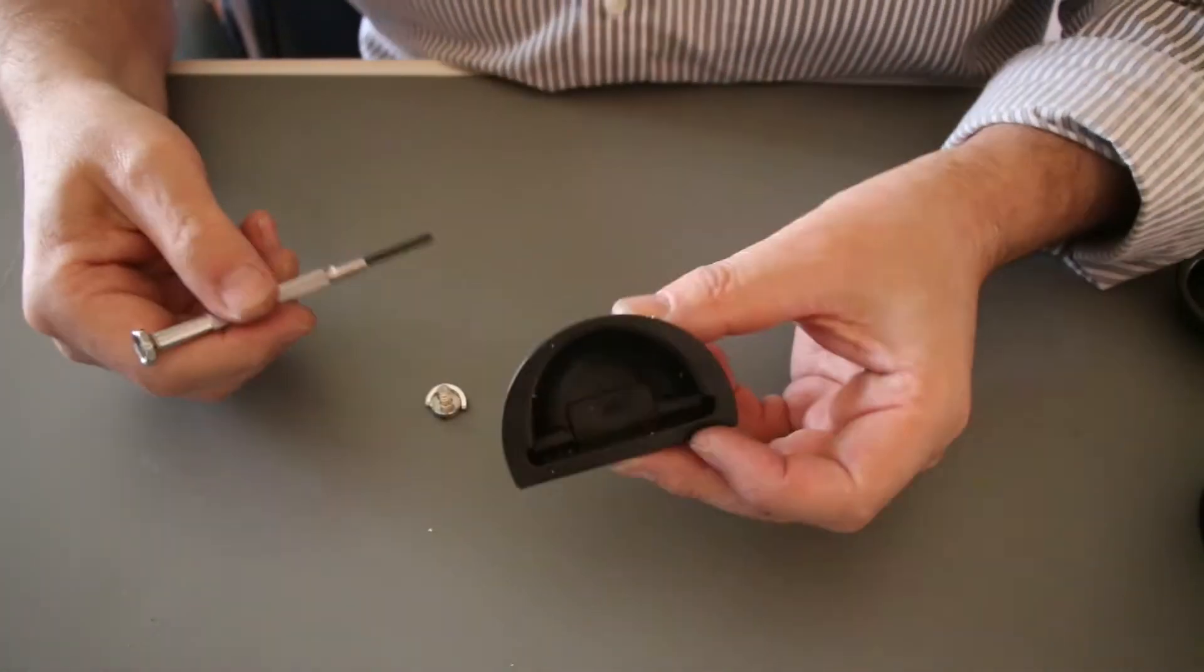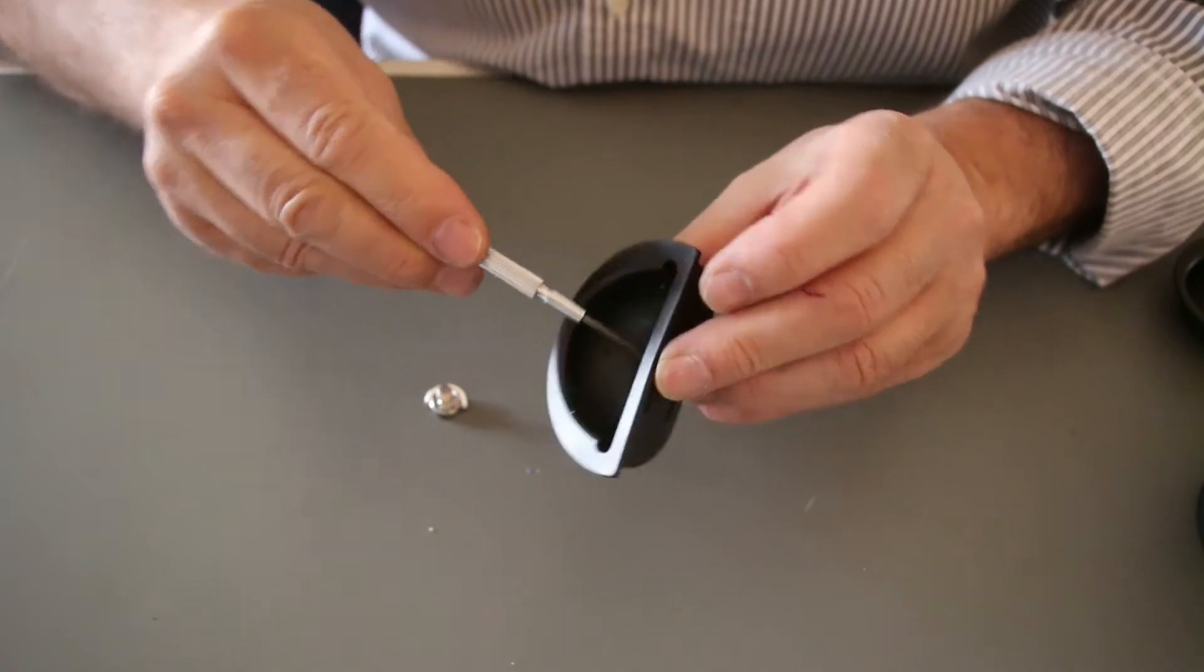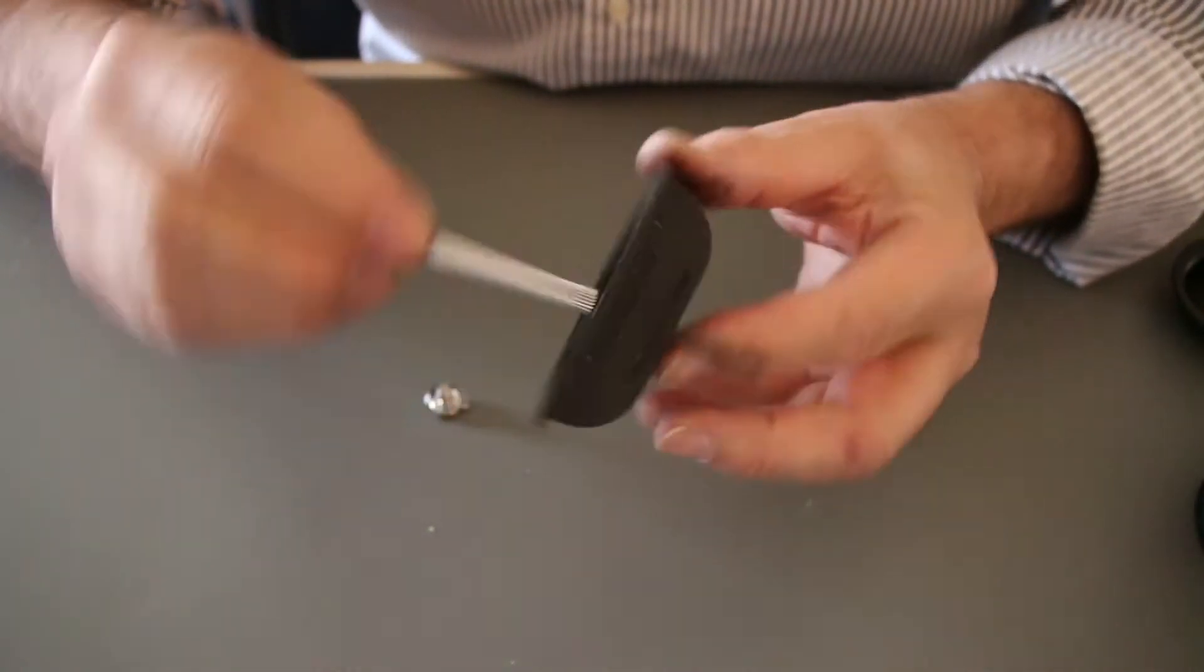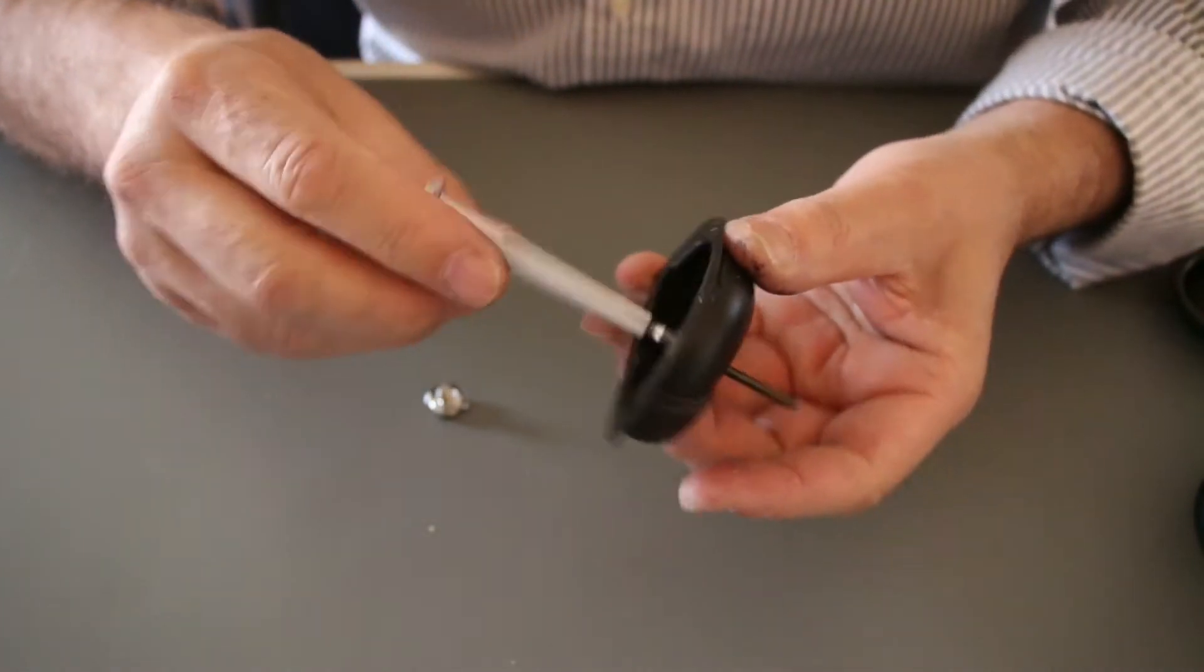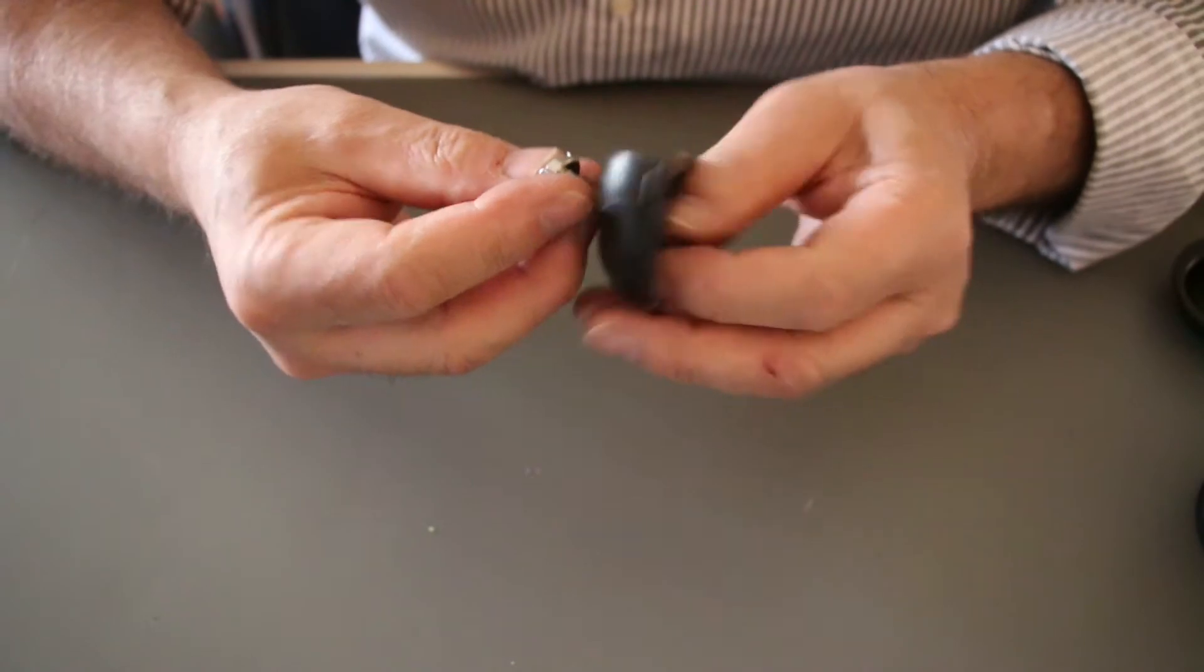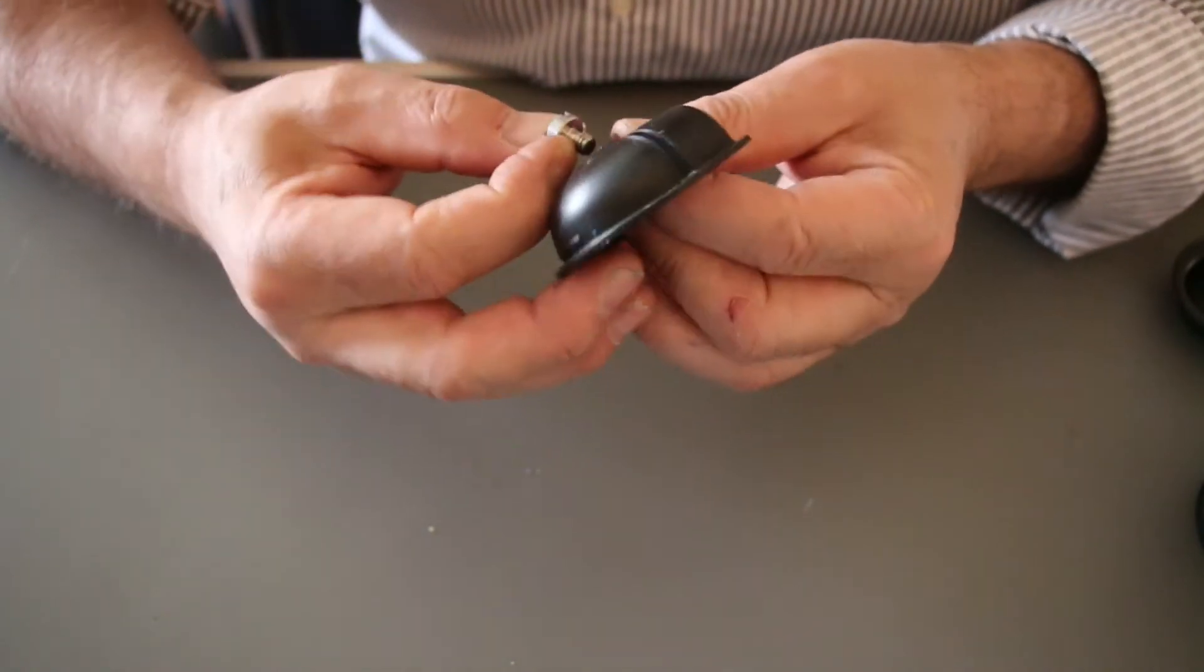Take a little screwdriver and poke a hole into the rubber inlay which comes with your Galileo for your iPhone 4. Now take a camera screw and stick it all through the rubber inlay.